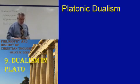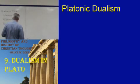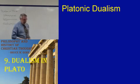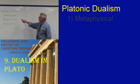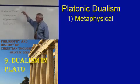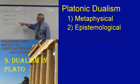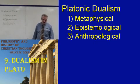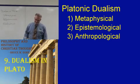In Plato's philosophy, we have several different points at which it seems to be a dualism. These are words familiar to you now. There's a metaphysical dualism, there's an epistemological dualism, and there's an anthropological dualism.